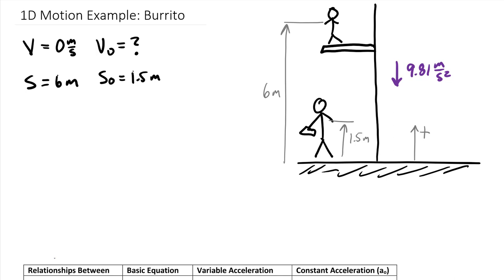And then we know we have a constant acceleration a sub c equal to negative 9.81 meters per second squared, once again negative because it's opposing our positive defined direction. So looking at these terms, it doesn't explicitly ask for time in this problem.